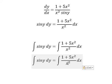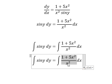Next, 1 divided by x squared and 5x squared divided by x squared. We will get this.